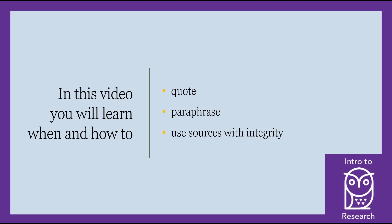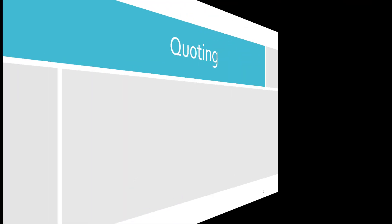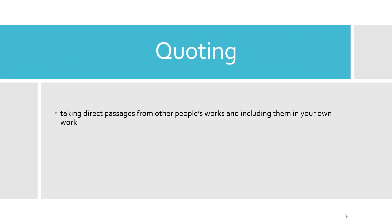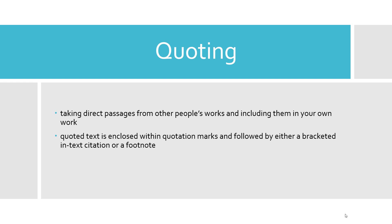The main two methods of citing or giving credit for someone else's work are quoting and paraphrasing. Quoting means taking direct passages from other people's works and including them in your own work. The quoted text is enclosed within quotation marks and followed by either a bracketed in-text citation or a footnote, depending on the citation style being used.